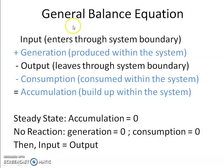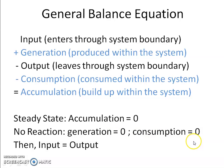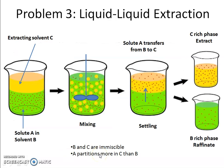To recap, the general balance equation takes the form: input plus generation minus output minus consumption equals accumulation. Since this is a steady state process, the accumulation term is zero. No reaction is taking place, so no species is being generated or consumed in a chemical reaction, meaning generation and consumption terms are also zero. The general balance equation simplifies to: input equals output.